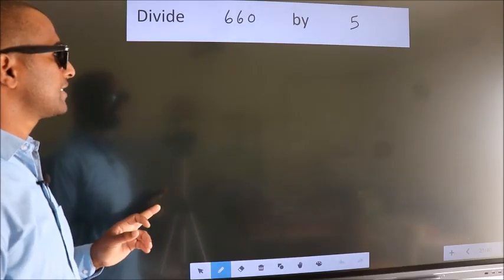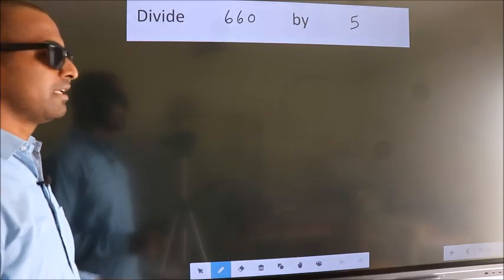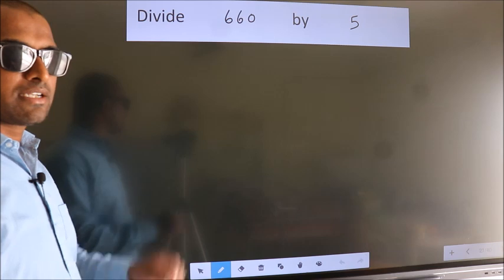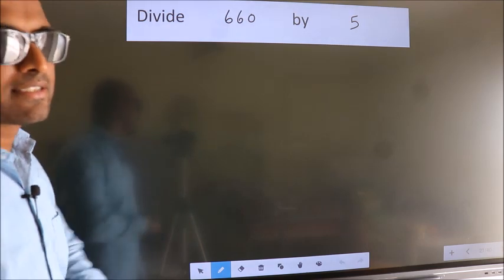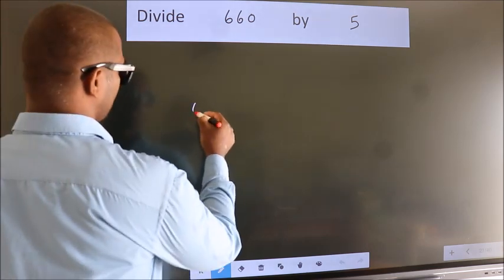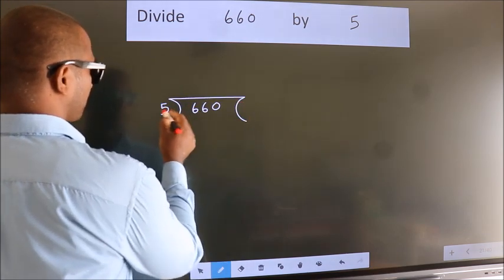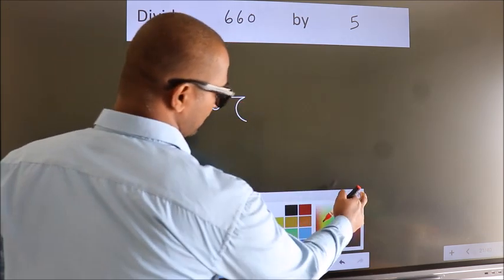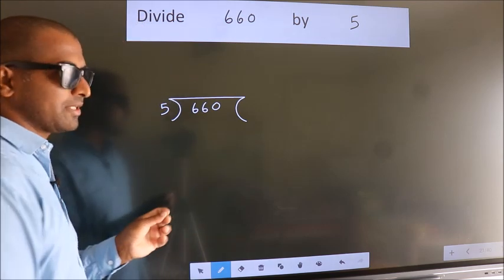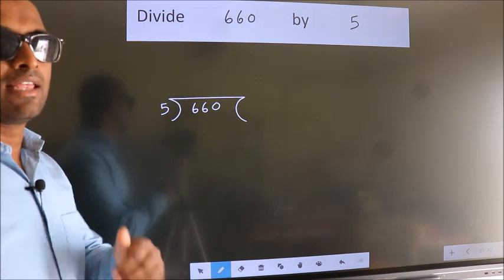Divide 660 by 5. To do this division, we should frame it in this way. 660 here, 5 here. This is your step 1. Next.